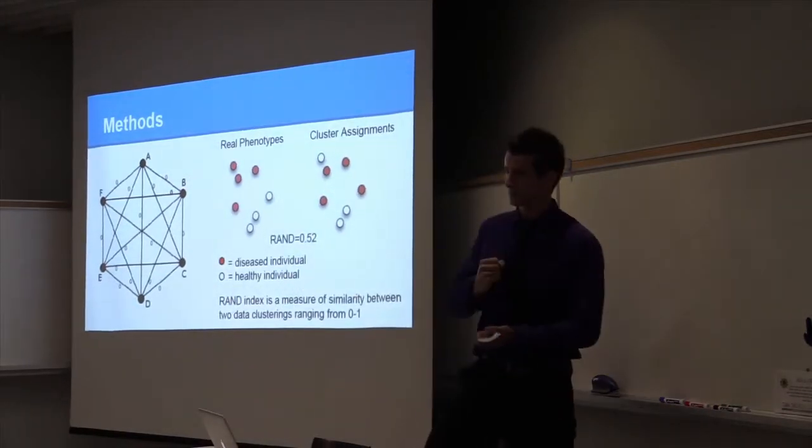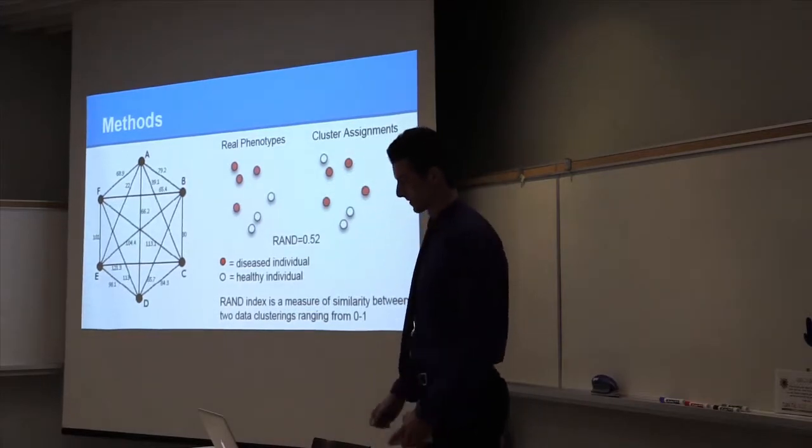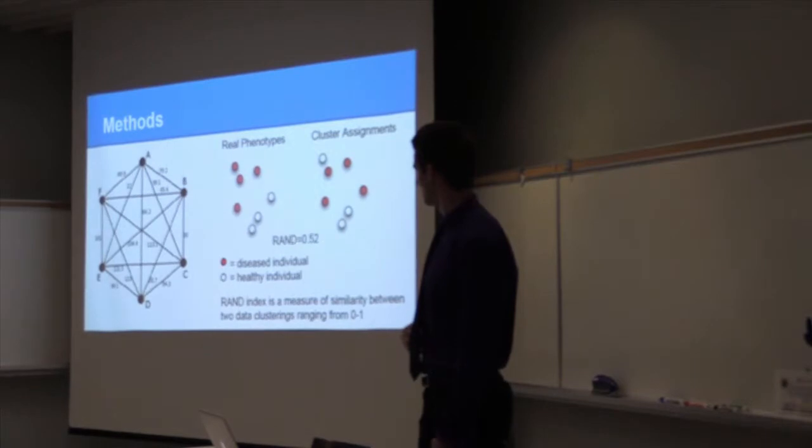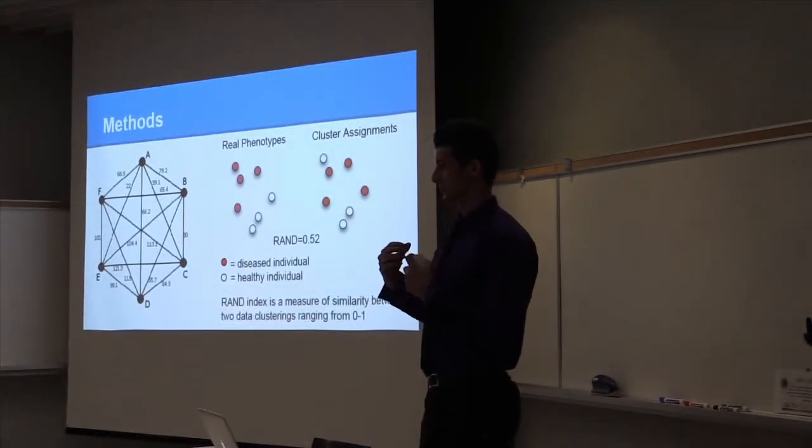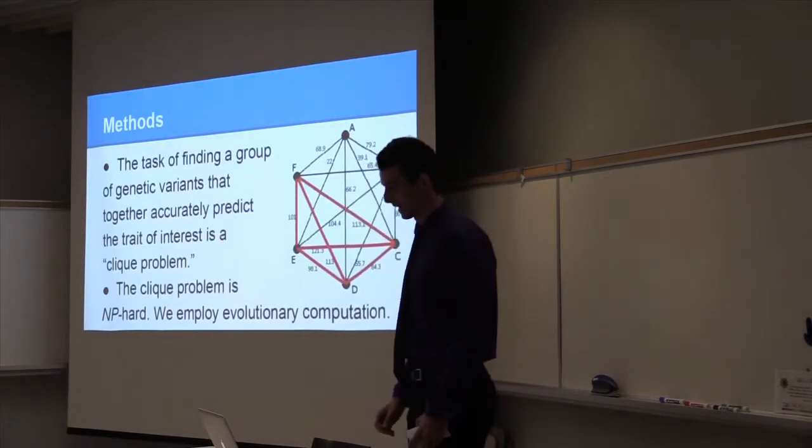So then you're going to repeatedly sample to generate an associator. So then this kind of shows after the sampling is done you have your edge weights with different values, and then those edge weights represent the measure of association between our SNP features.